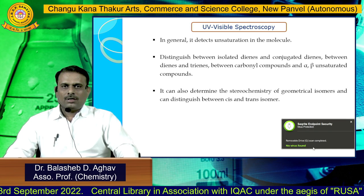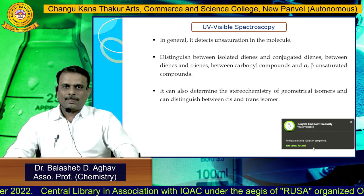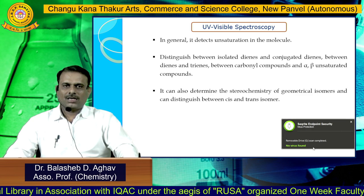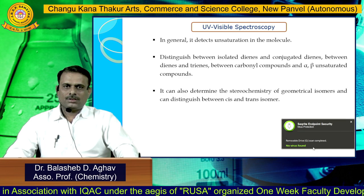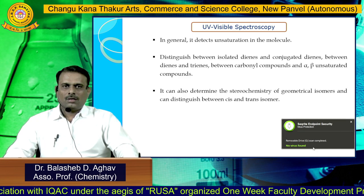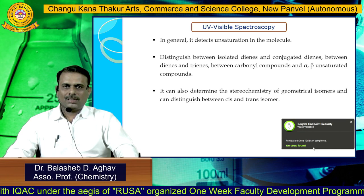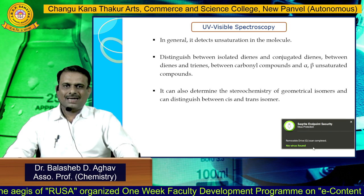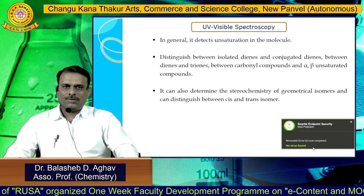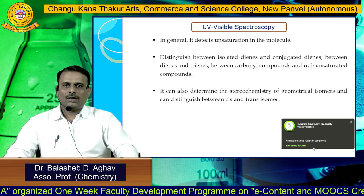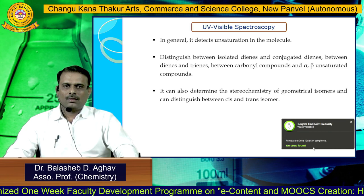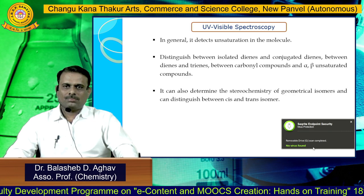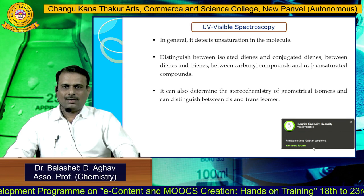We will talk about ultraviolet visible spectroscopy. In general, UV-visible spectroscopy detects unsaturation in the molecule, which can distinguish isolated dienes and conjugated dienes, distinguish between dienes and trienes, and between carbonyl compounds and alpha-beta unsaturated carbonyl compounds. UV-visible spectroscopy can also determine the stereochemistry of geometrical isomers such as cis and trans.